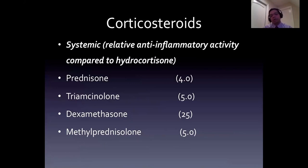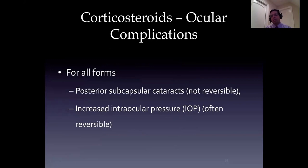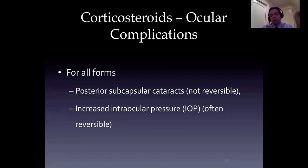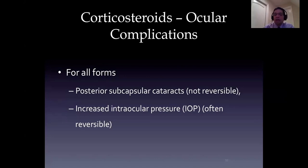Prednisone is about four times more potent than hydrocortisone; triamcinolone is about five times more potent, as is methylprednisolone. All forms of corticosteroids can cause PSC cataracts and increased intraocular pressure. IOP elevation from periocular corticosteroids can occur at any point in the course - if you gave a periocular corticosteroid injection six months ago, it is still possible that the patient can get IOP elevation. So once committed to local therapy, it's very important to monitor intraocular pressure even after inflammation is gone.